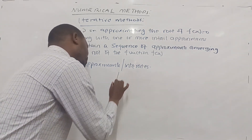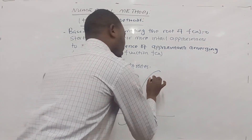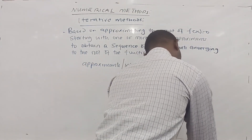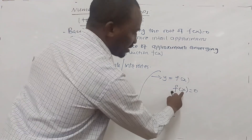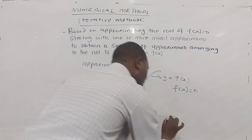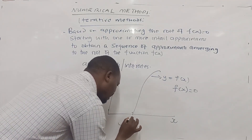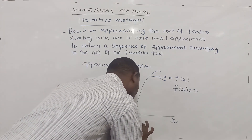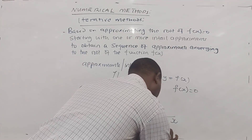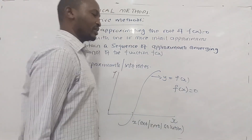Graphically, if you plot in a Cartesian plane the curve y = f(x), the root of f(x) = 0 is where the curve y = f(x) cuts the x-axis. That point is what we call the root, or the zero, or the solution of y = f(x), or equivalently the solution of f(x) = 0.